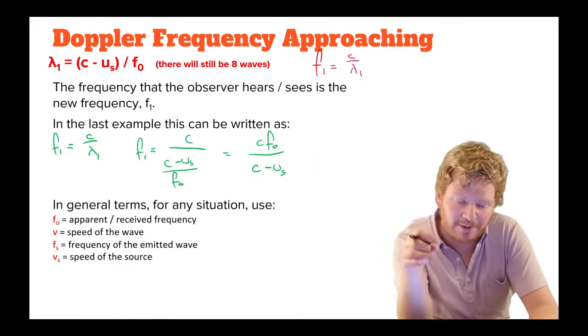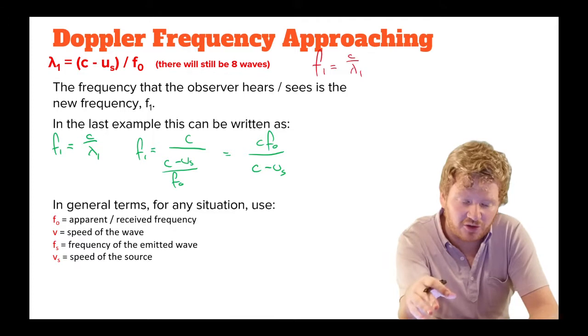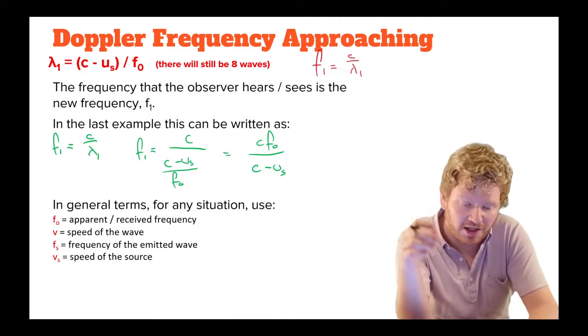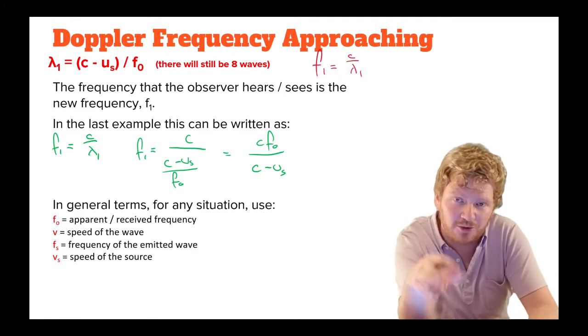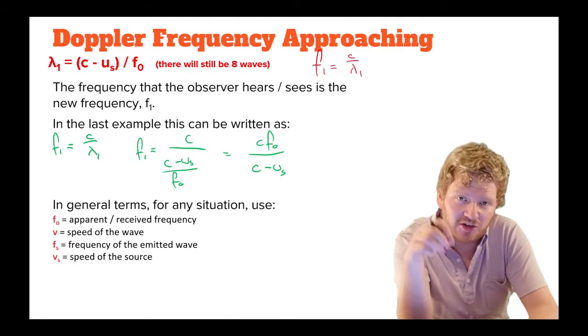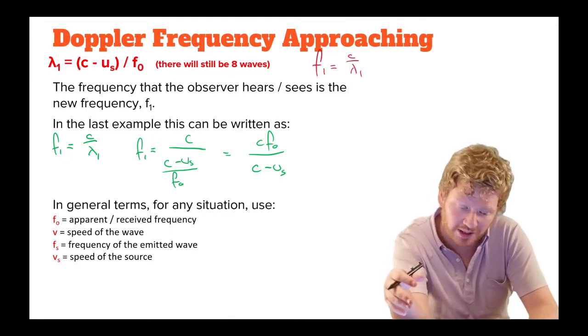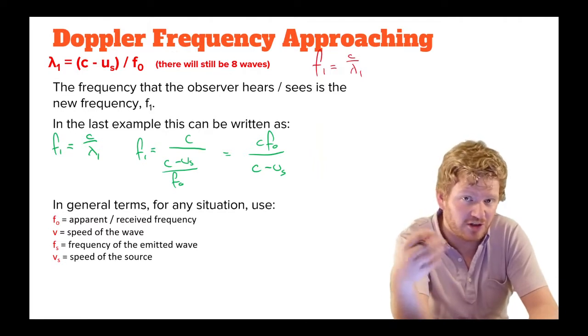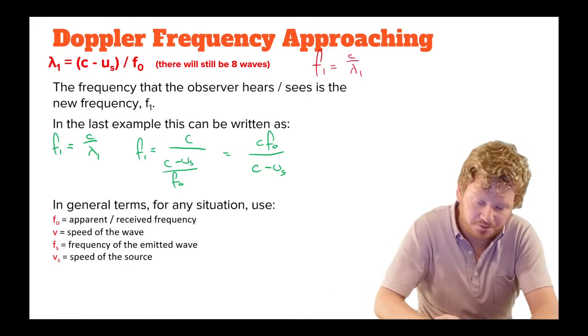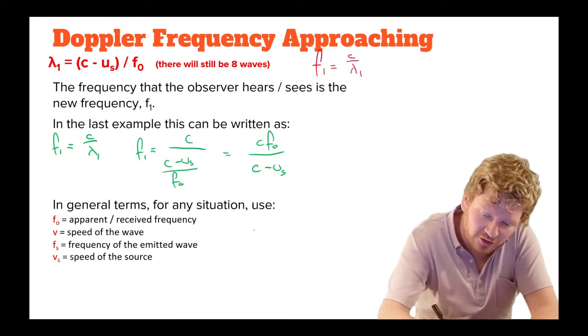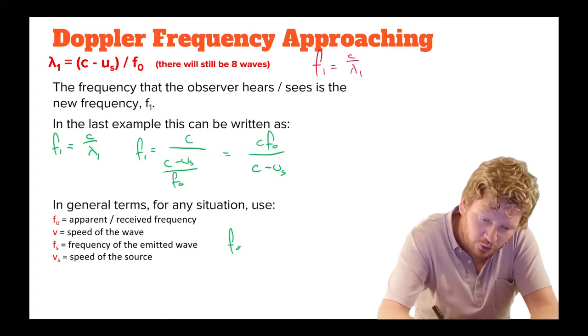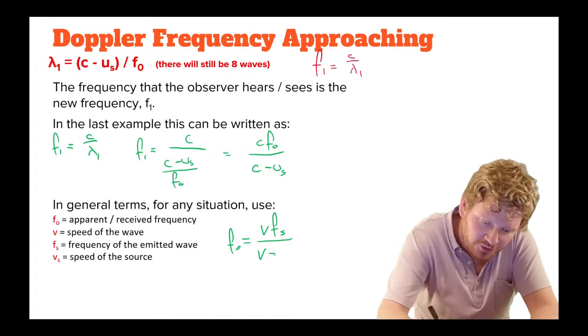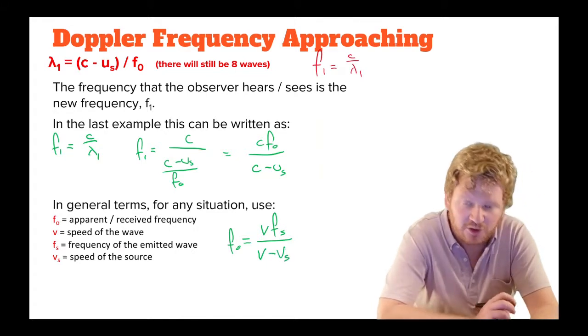Now, we want to make this a little bit more general. So the equation that you'll see in your textbooks and in the CIE papers is f0 for the apparent or the received frequency, the frequency that the observer hears. v is the speed of the wave, the speed of propagation of the wave. fs is the source frequency, the frequency that is being emitted. And vs is the speed of the source. So this equation can be rewritten as f0, or the observed frequency, is equal to v, which is the speed of the wave, times fs, which is the speed of the source, divided by v minus vs, so the velocity of the source.